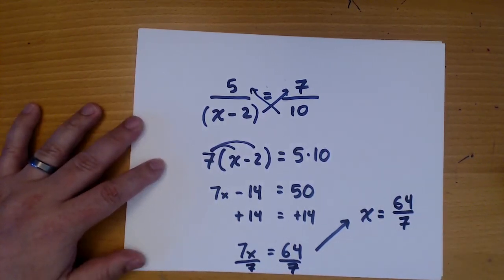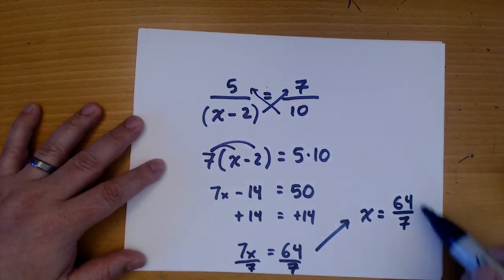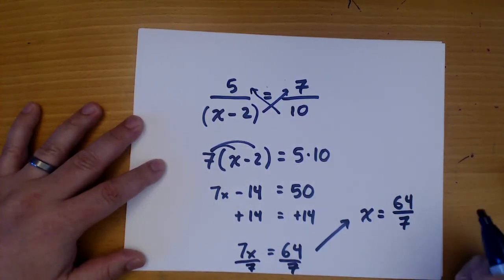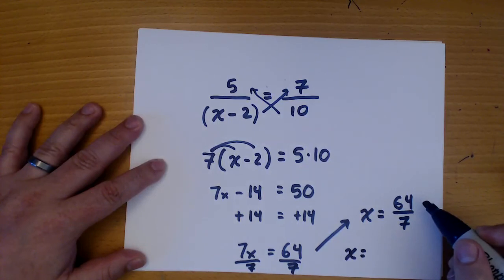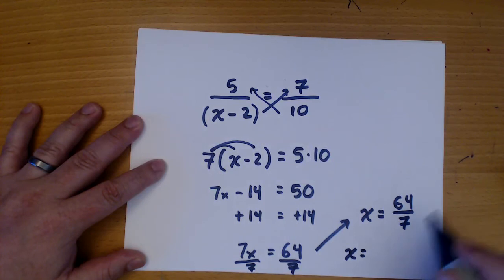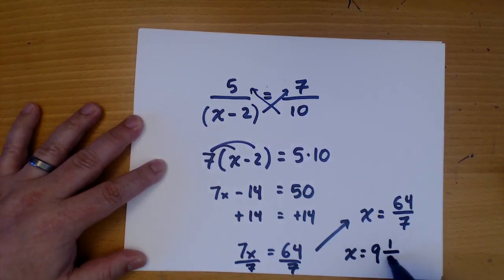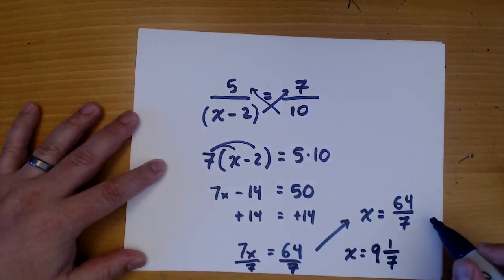But sometimes your answer isn't listed this way, but instead would be listed as a mixed fraction. Well, 7 doesn't go into 64, but it does go into 63. It goes into 63 nine times with one remainder. And that would be the same answer just as a mixed fraction.